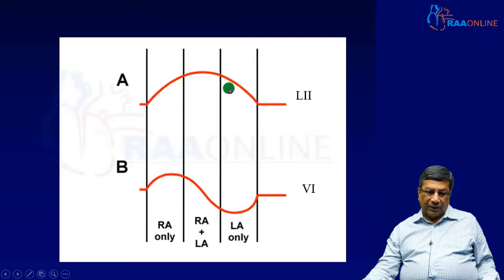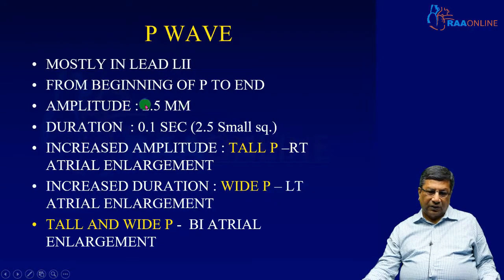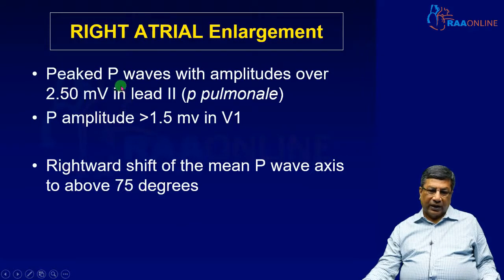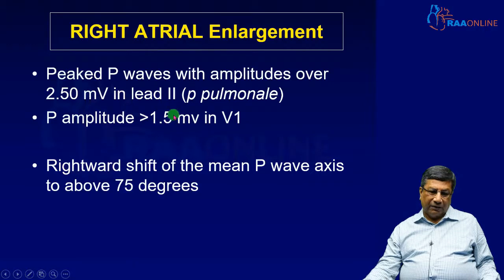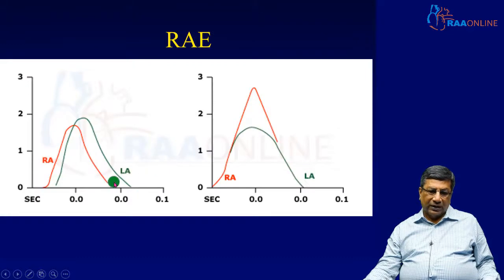The P wave is positive in L2 and biphasic in V1. Whenever the P wave exceeds 2.5 millimeters in height, it indicates right atrial enlargement. When it exceeds 2.5 millimeters horizontally in duration, it indicates left atrial enlargement. A tall and wide P wave indicates biatrial enlargement. For right atrial enlargement, the amplitude is more than 2.5 millivolts — sometimes called P pulmonale, as it is more common in severe pulmonary stenosis. In V1, the initial positive component of the P wave being more than 1.5 millimeters also indicates right atrial enlargement.